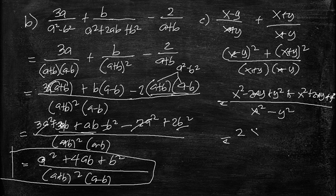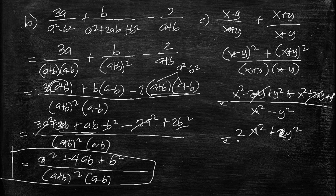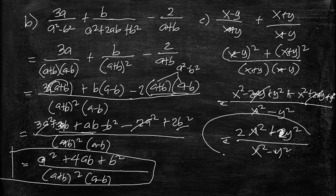The 2xy terms cancel. We have x squared plus x squared equals 2x squared, and y squared plus y squared equals 2y squared. So the result is 2x squared plus 2y squared over x squared minus y squared. Going back to verify: x squared minus 2xy plus y squared plus x squared plus 2xy plus y squared gives 2x squared plus 2y squared, confirming our answer.